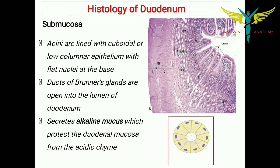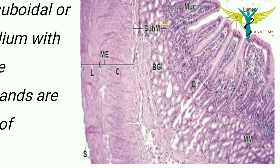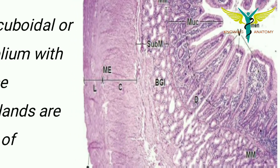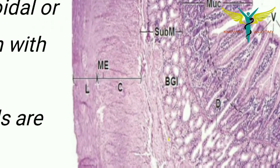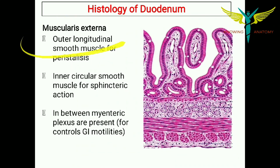The submucosa also consists of acini lined with cuboidal or low columnar epithelium, and these have flat nuclei at the base. The ducts of these Brunner's glands open into the lumen of the duodenum. As you can notice in the diagram, this is the submucosa layer and these are the Brunner's glands.